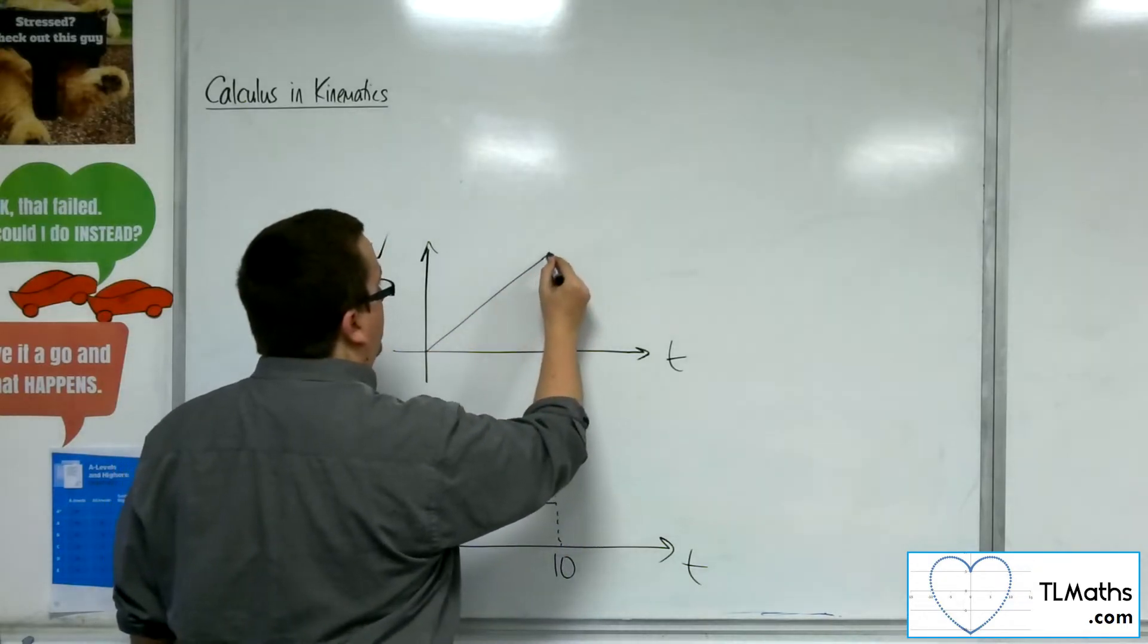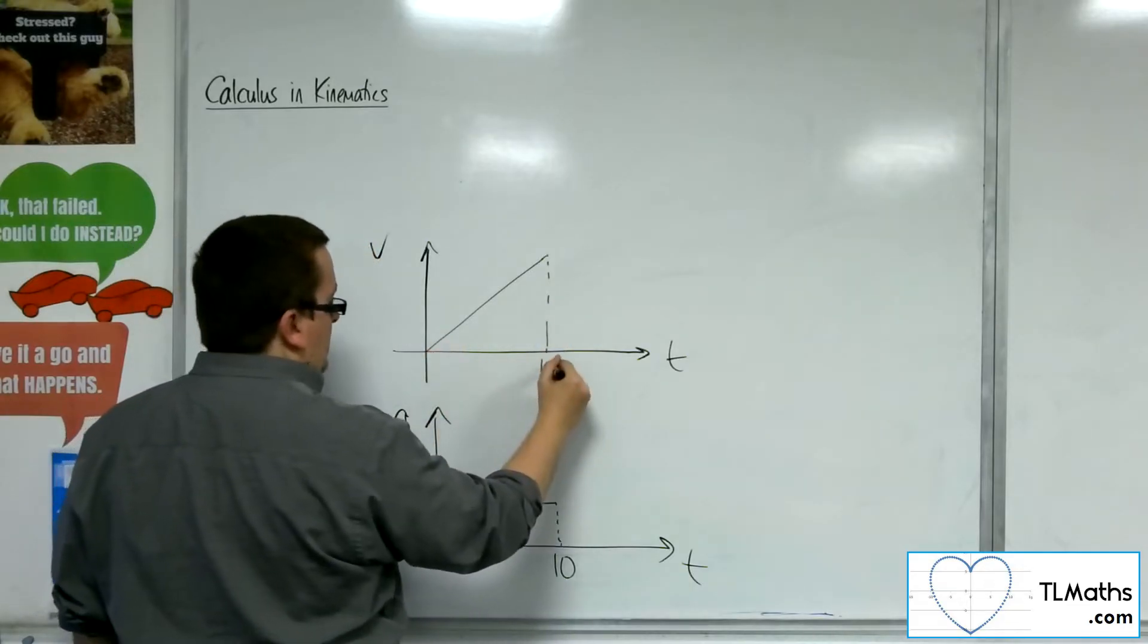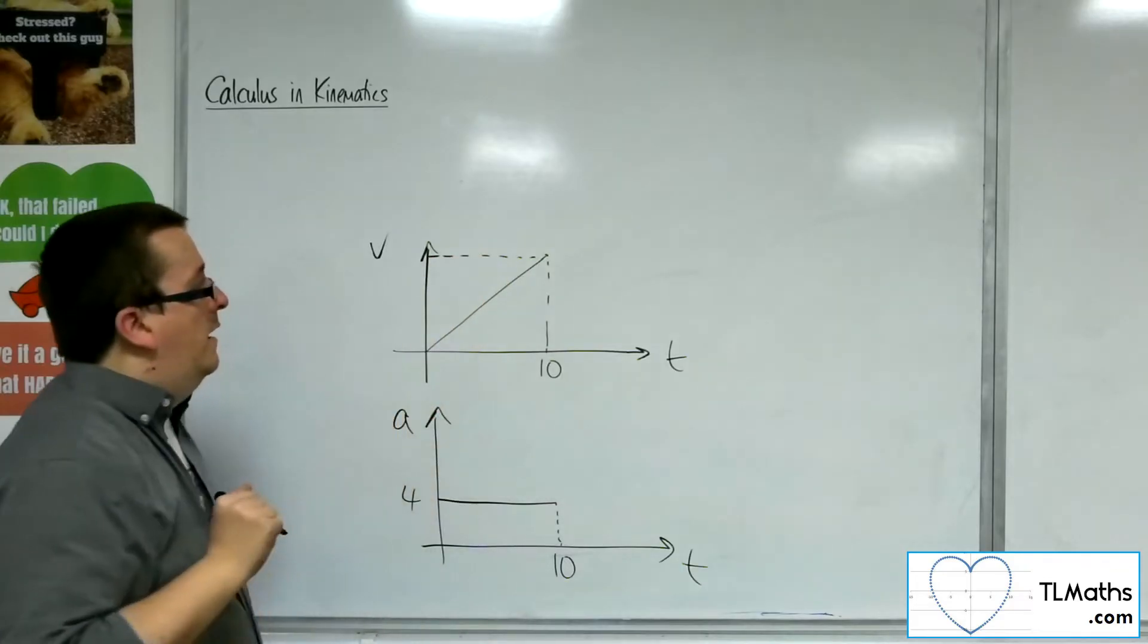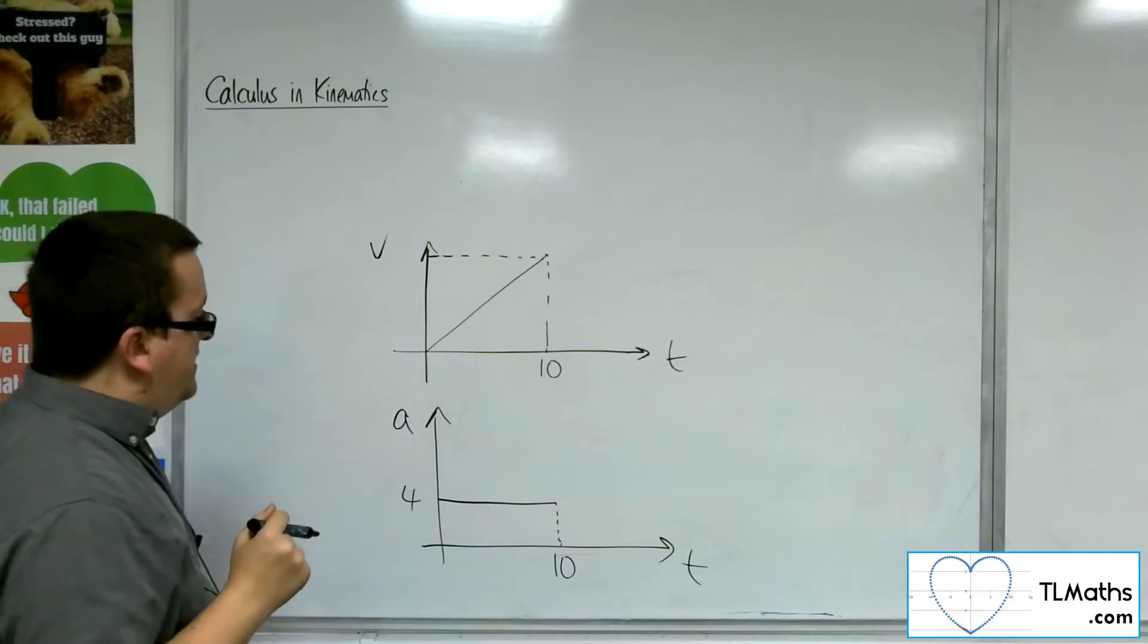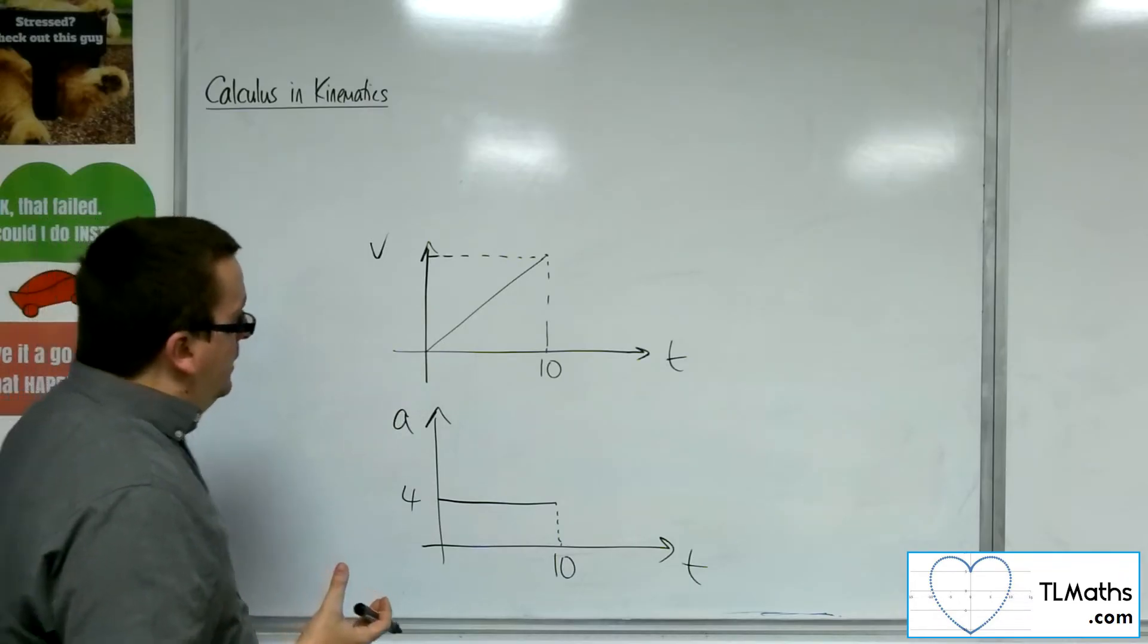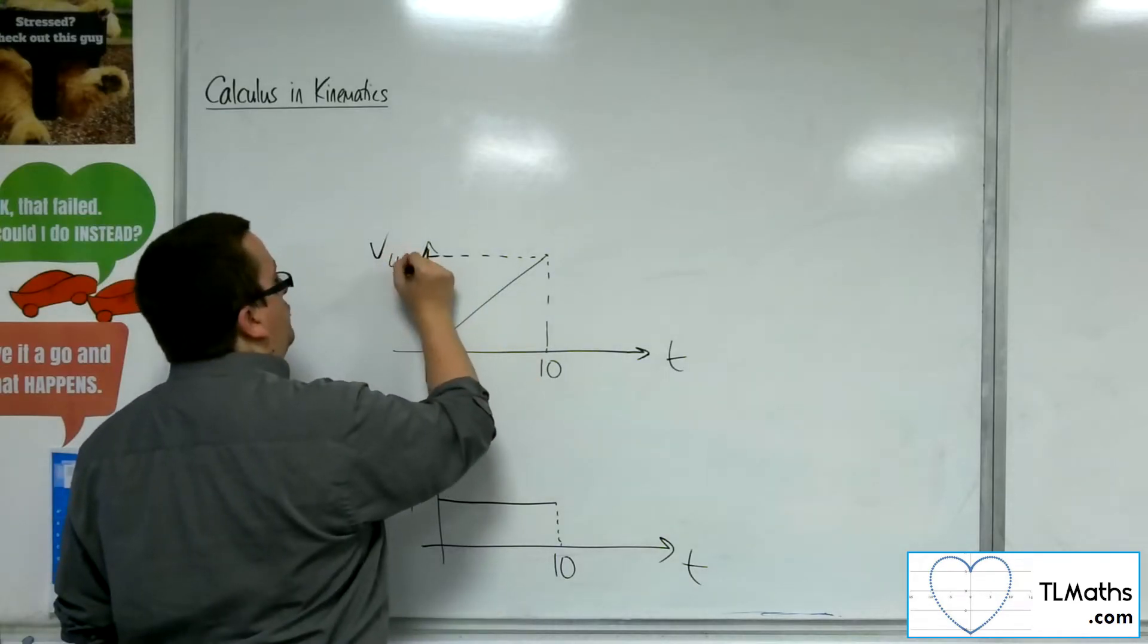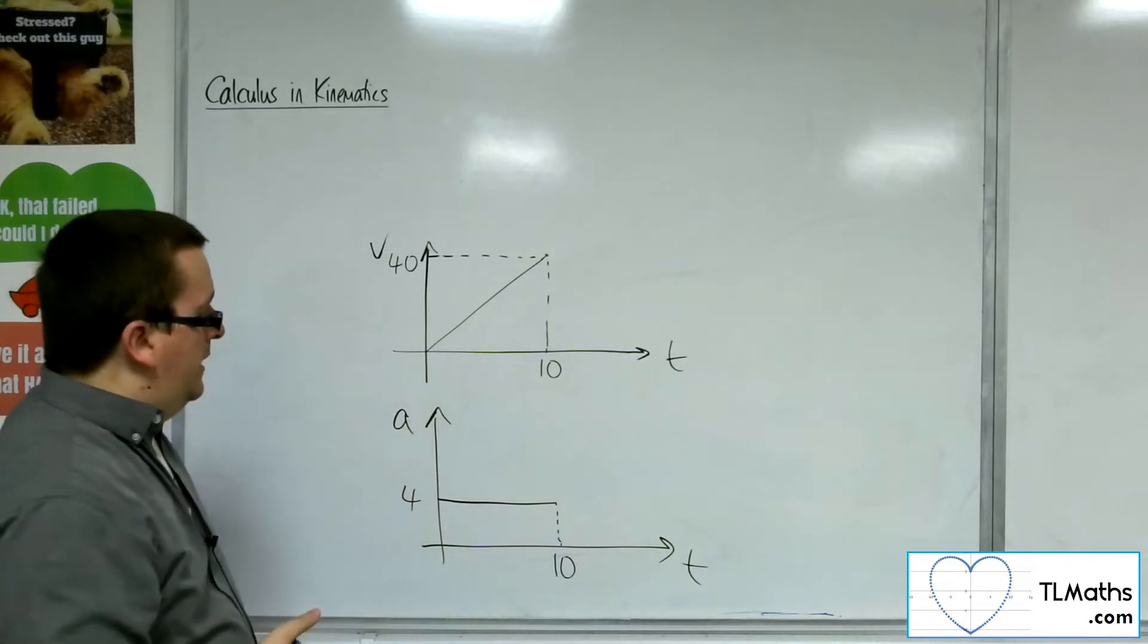So for the first 10 seconds, let's say we're accelerating steadily. So if that's 10, then I would be able to work out what the height would be. So let's say we're starting at 0 and we're accelerating at 4 metres per second per second. So if the gradient of this line is 4, then 1 along 4 up, and so we would have to reach 40 metres per second by the time we get to 10 seconds.